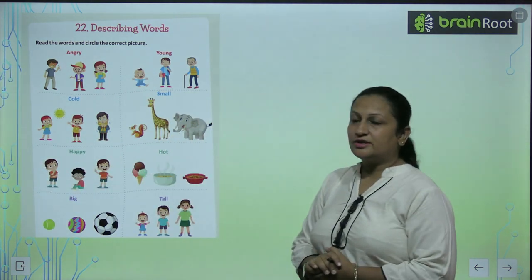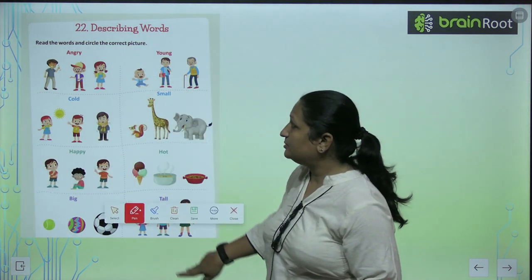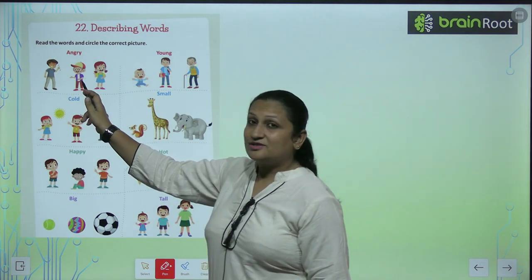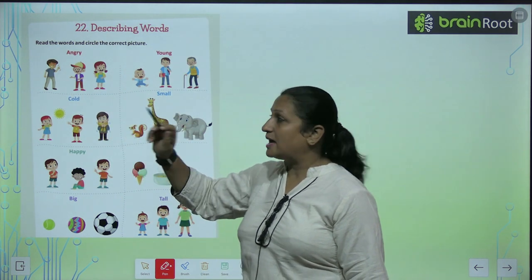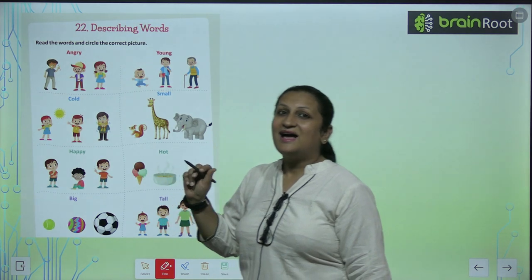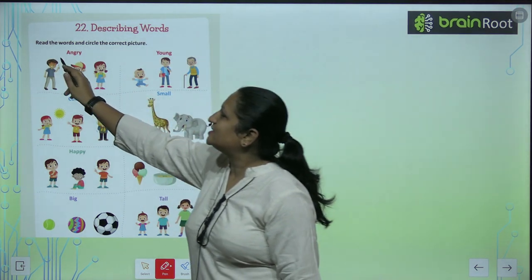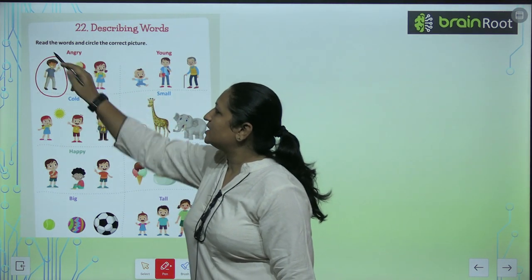See the first picture children? We are watching three children. One is very happy, the girl is also happy, but this child is angry. So we will circle out this.